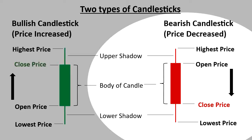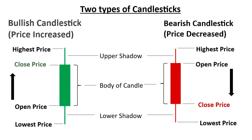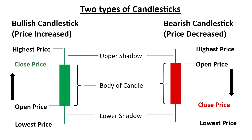Remember, in a bullish candlestick the close price is higher than the open price, and the bearish candlestick is the reverse — the closing price is lower than the open price. So these are the two types of candlesticks formed based upon the price action: the bullish candlestick, which is green and represents a price increase, and the bearish candlestick, which is red and represents a decrease in price. The only difference between them is the closing price.